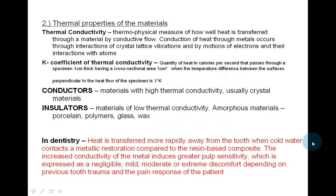Thermal properties of materials. Thermal conductivity is the thermophysical measure of how well heat is transferred through a material by conductive flow. Conduction of heat through metals occurs through interactions of crystal lattice vibrations and by motions of electrons and their interactions with atoms. K is the coefficient of thermal conductivity — the quantity of heat in calories per second that passes through a specimen one centimeter thick with a cross-sectional area of one centimeter squared when the temperature difference between the surfaces is 1K. Conductors are materials with high thermal conductivity, usually crystalline materials. Insulators are materials of low thermal conductivity — amorphous materials such as porcelain, polymers, glass, and wax.